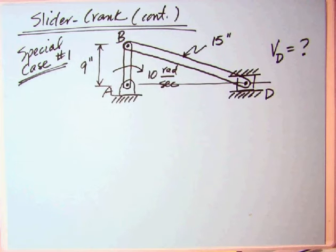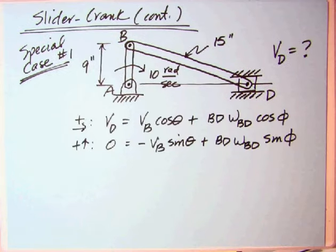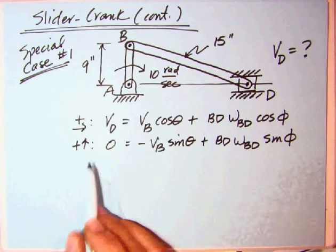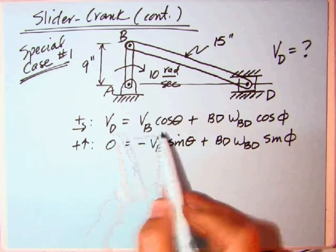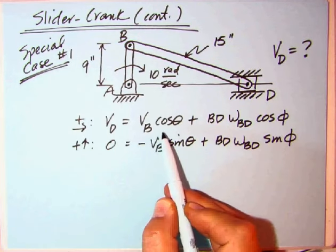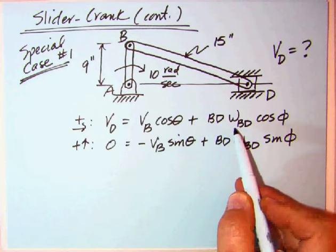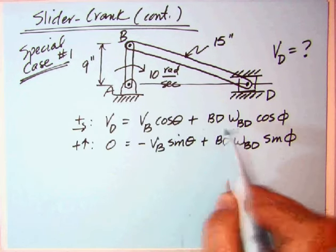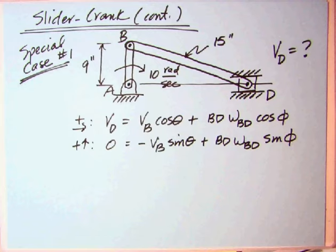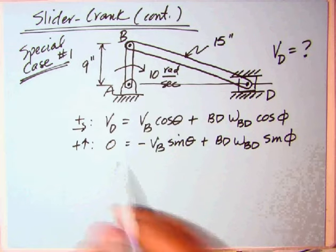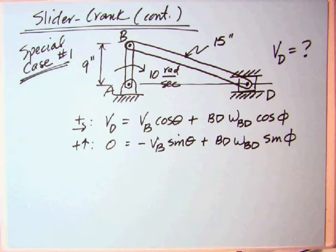Let's write out our two equations from the previous page. The velocity of D is velocity of B cosine theta plus the velocity of D relative to B, BD omega BD cosine phi. And the other equation, zero equals minus VB sine theta plus BD omega BD sine phi.